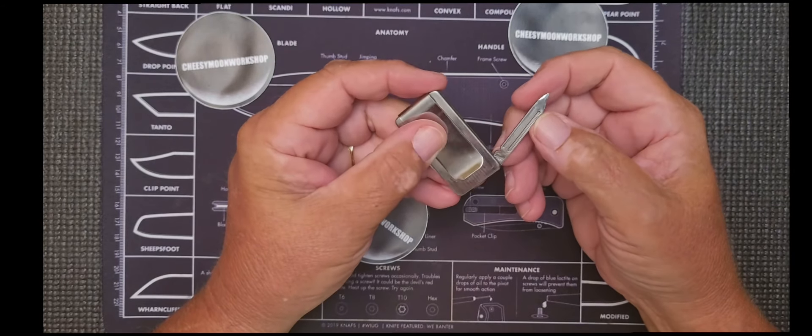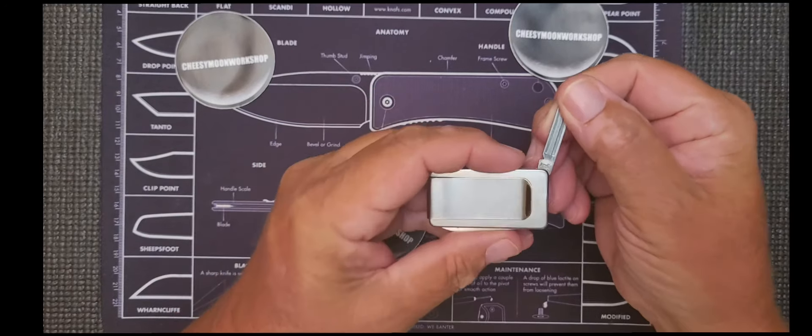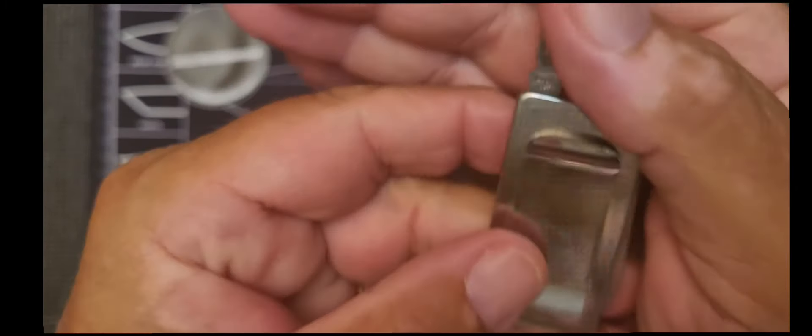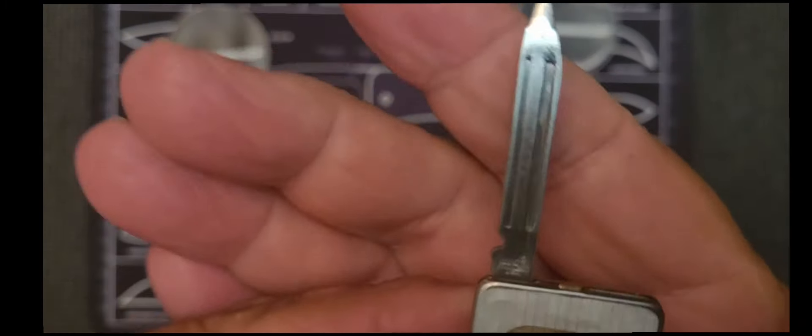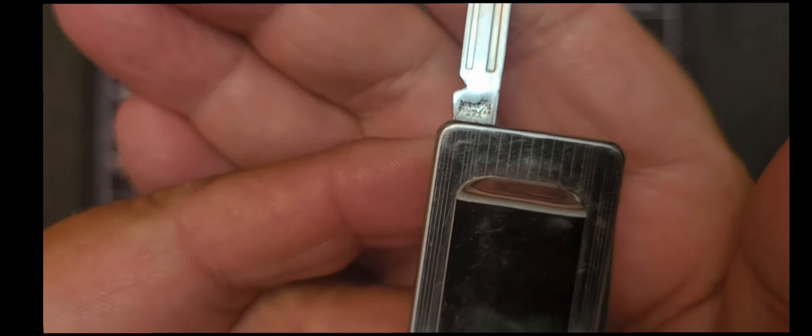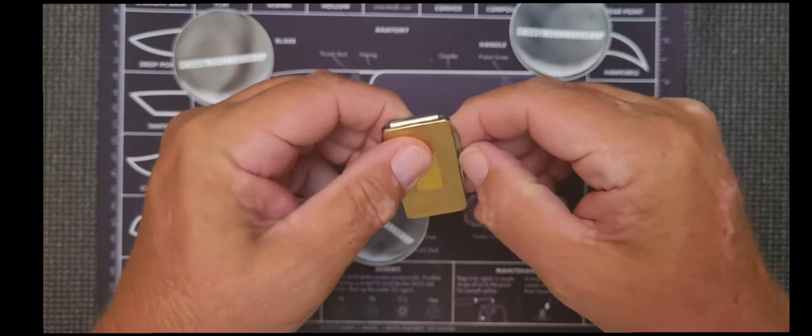It's a little nail file and a little blade. This is made by Imperial USA. It's kind of a neat little pocket knife money clip. I have several of these and I just kind of like them. Pretty cool.